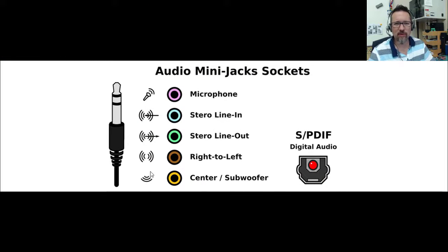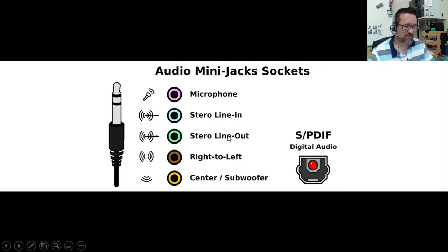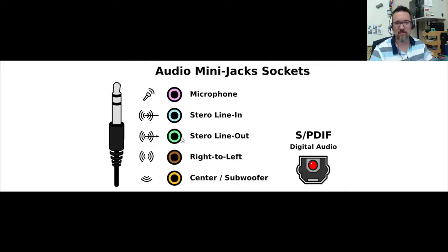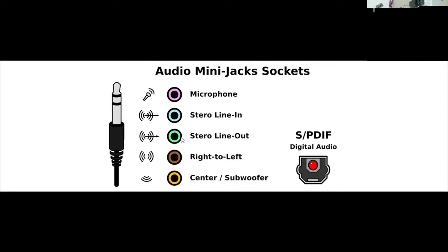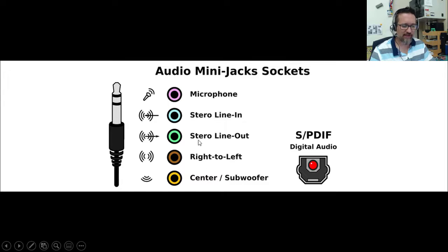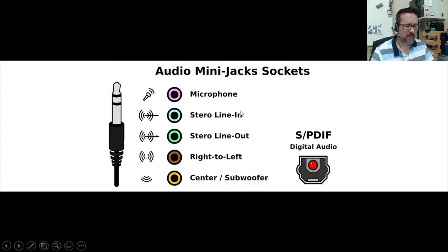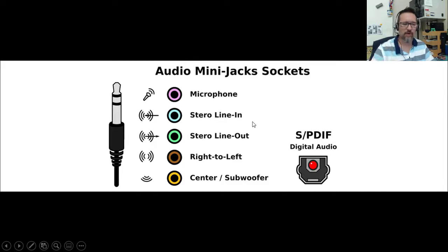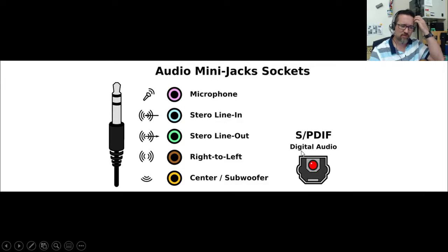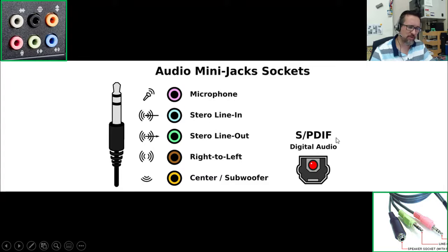Of course, what is a computer without sound? Let's look at audio mini jack sockets. You'll recognize the light green one — that's normally where you plug your speakers in. For surround sound systems with multiple speakers you have a woofer output, stereo line-out left and right, a microphone input in pink, and a stereo line-in in light blue for recording. Some computers also have a digital audio connection.